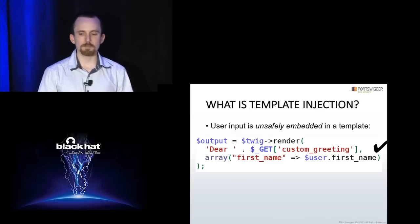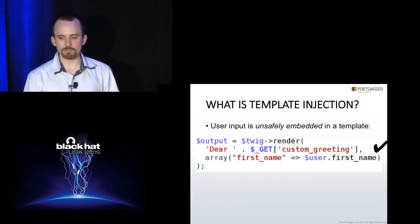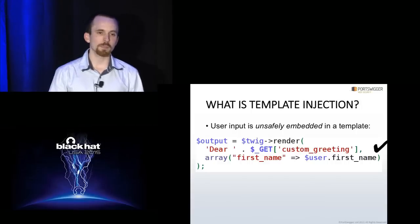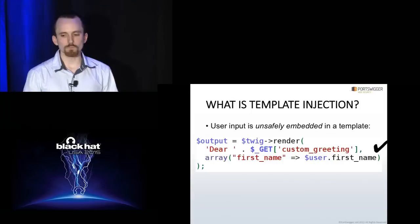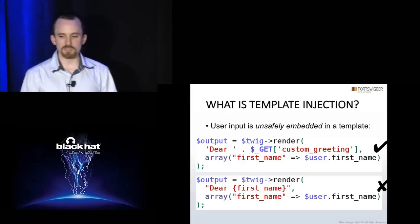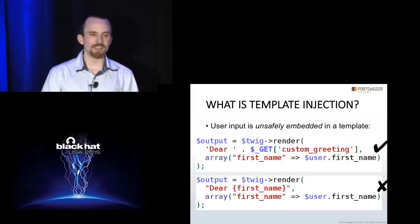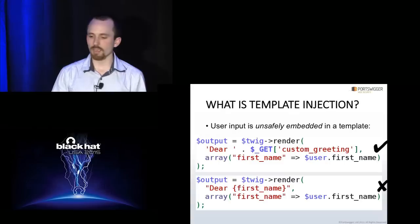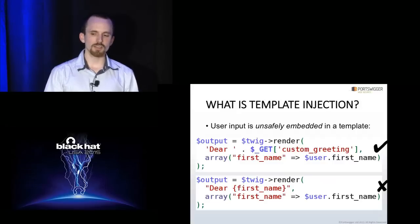What is template injection? It's simply when user input is unsafely embedded into a template. If you look at the first argument to the render function, you've got user input being concatenated into a template string. That means if the user input contains a template expression, it will be evaluated by the server — that's the core of this vulnerability. To be absolutely clear, the second example is not vulnerable to template injection: you still have user input in the first name variable being passed into a template, but it isn't being put into the template itself. It's just being passed in as an argument, so any template expression inside that variable would just be ignored.